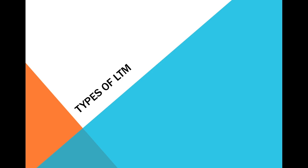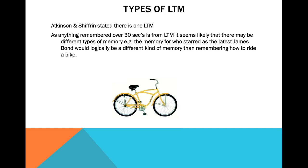This video follows on from the multi-store model video, and it looks specifically at types of long-term memory. In the multi-store model, by Atkinson and Shiffrin, they suggest that there are three stores: information goes into the sensory register, if you pay attention it transfers to short-term memory, and if rehearsed it goes into long-term memory. When we evaluated that model, we said that the idea of just one long-term memory store is a bit oversimplified — maybe there are separate types of long-term memory, and that makes a lot of sense.